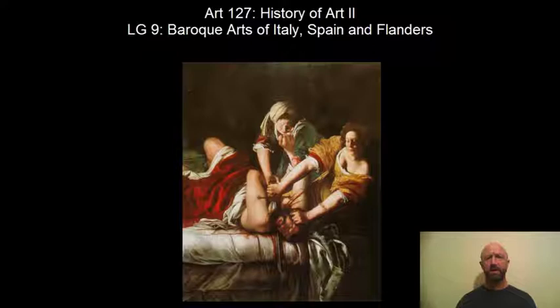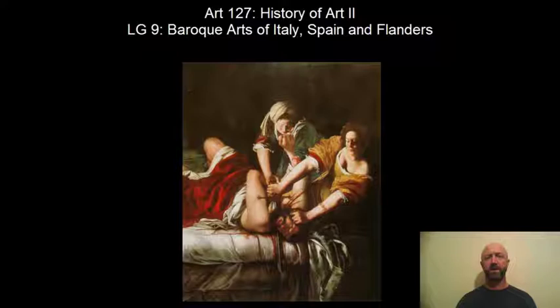I want to start with the context before we go into Caravaggio's work. The Baroque period is the first kind of international period of art in Western Europe, meaning that a lot of these artists are traveling from country to country showing their stuff and people are becoming aware of art from all over and collecting it. For Italy and Spain, these are all Catholic nations. The big thing going on in the context is what's known as the Counter-Reformation — the Catholic response to the Protestant Reformation.